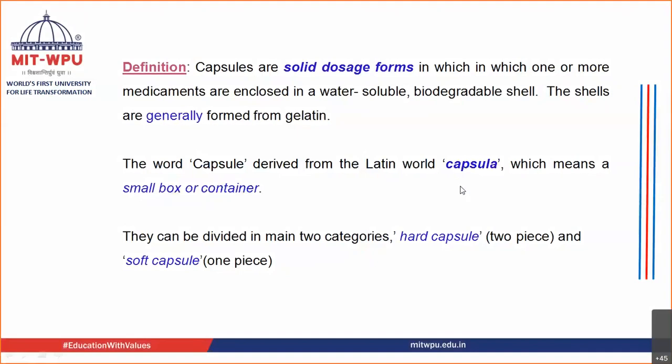One or more medicaments are incorporated into this shell to form a solid unit dosage form. The shells are generally made from gelatin — as the name goes, hard gelatin capsule or soft gelatin capsule — and 99% of the time the capsule shell you are consuming is made from gelatin.